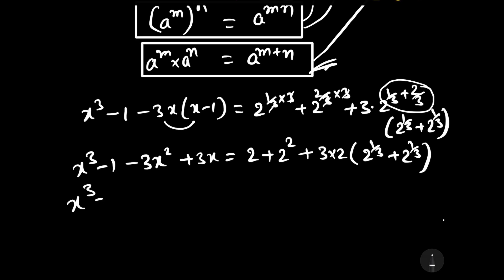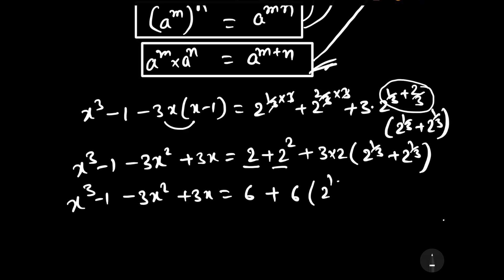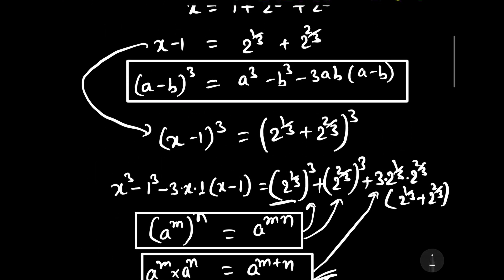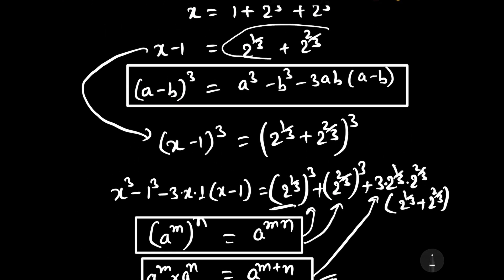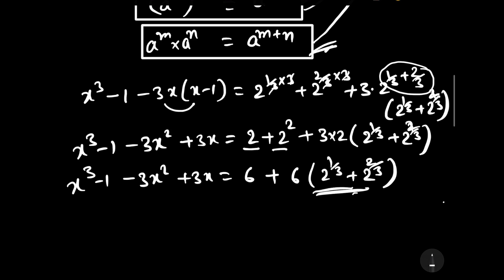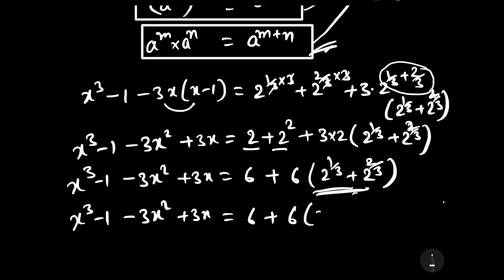Now we can write it as x cubed minus 1 minus 3x squared plus 3x is equal to 2 plus 4, that is 6, plus 6 times (2 to the power 1/3 plus 2 to the power 2/3). We know that 2 to the power 1/3 plus 2 to the power 2/3 can be written as x minus 1. Substituting: x cubed minus 1 minus 3x squared plus 3x equals 6 plus 6 times (x minus 1).